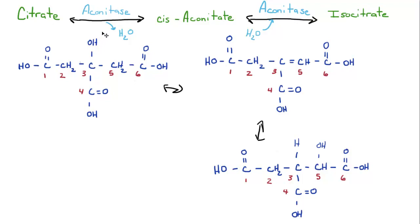First off, citrate has a water removed. You've got the hydroxyl here on carbon 3, one of the hydrogens from carbon 5 coming off. It's going to form a double bond between carbon 3 and carbon 5. And then this water is going to be put back on, except instead of the hydroxyl group being on the third carbon, the hydrogen being on the fifth carbon, it's going to be the other way around. So you've got the hydroxyl group here on the fifth carbon, the hydrogen here on the third carbon to form isocitrate.